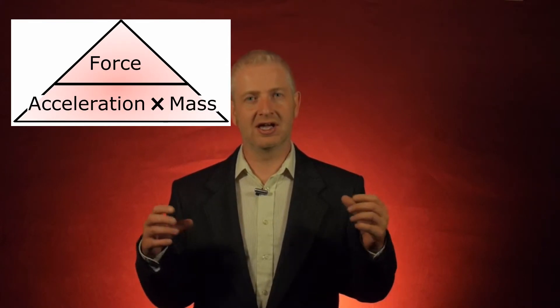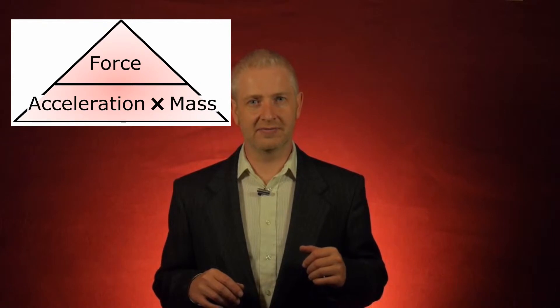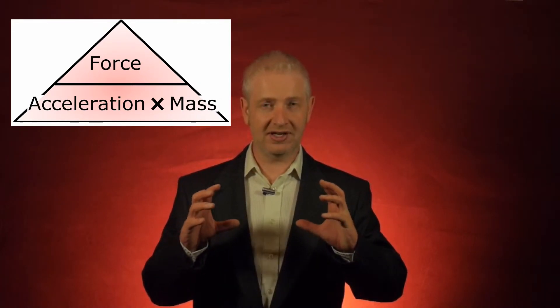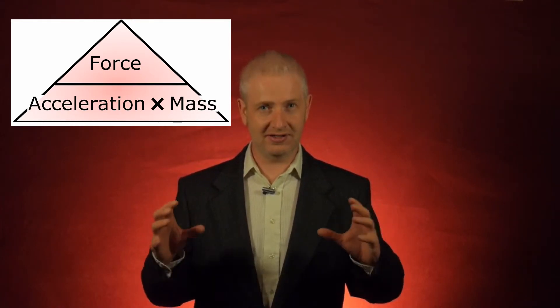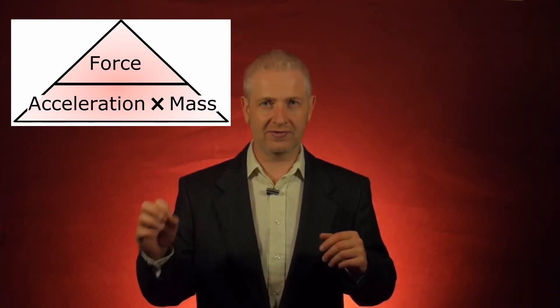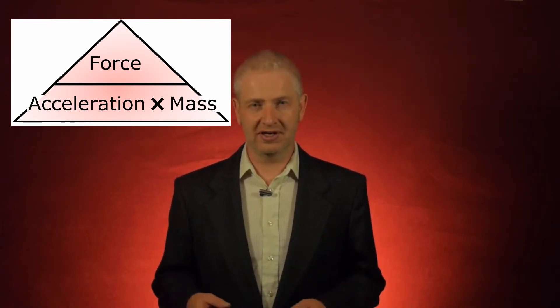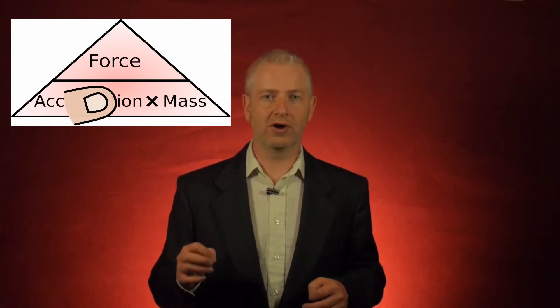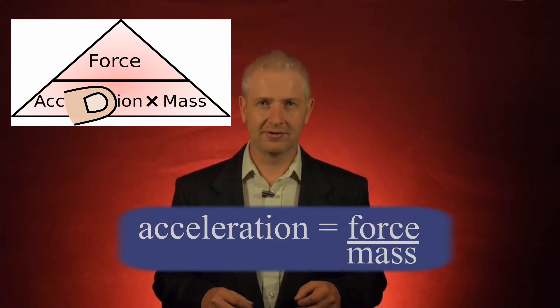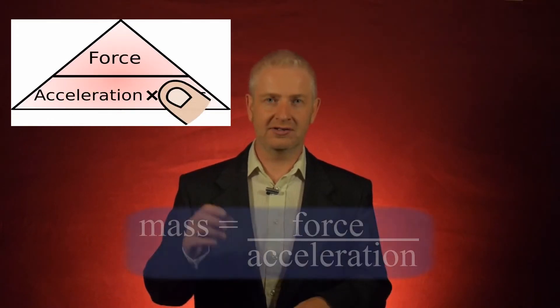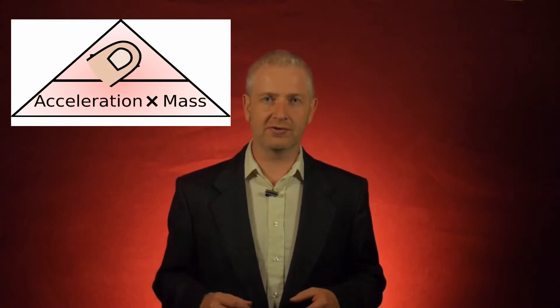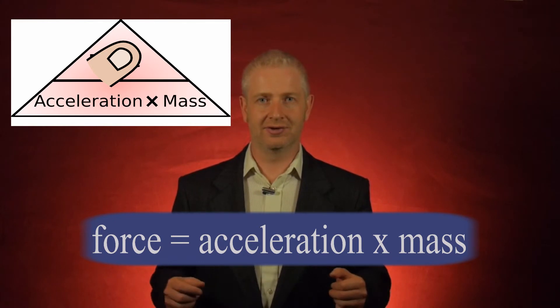What I can do is put this equation into a triangle. I put force at the top of the triangle, and acceleration times mass at the bottom, with a line through the center. Now, whatever I want to find, I just cover over — and what's left tells me the equation I need. If I want to find acceleration, I cover it over and I'm left with force divided by mass. If I want to find mass, I cover it over and I'm left with force divided by acceleration. If I want to find force, I cover it over and I'm left with acceleration times mass.